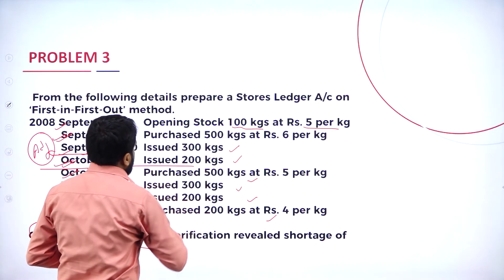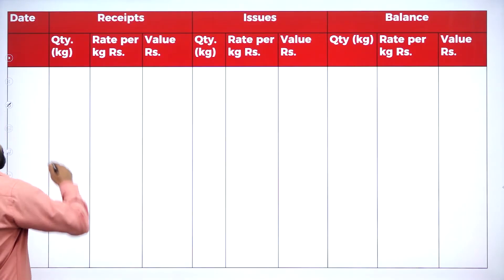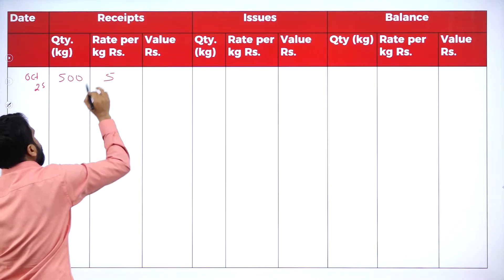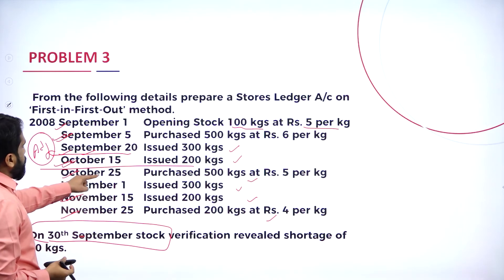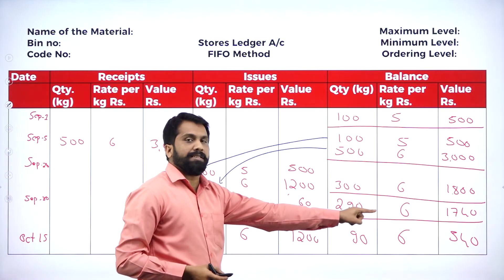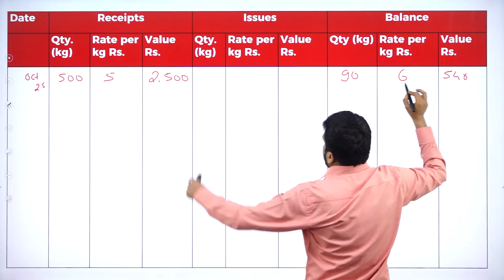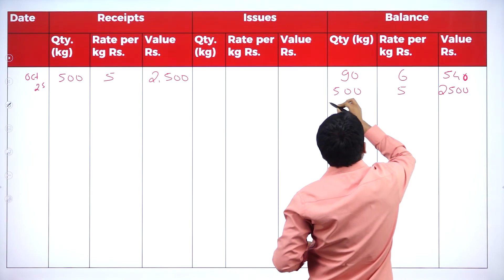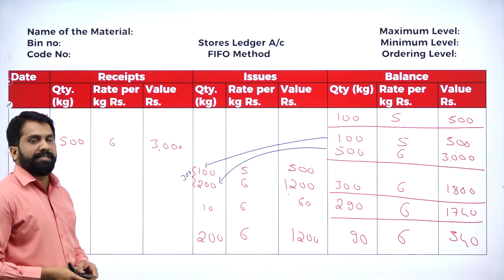October 25th: purchased 500 kgs at rupees 5 per kg — value 2500. In the balance column, copy the old balance: 90 kgs at 6, value 540. Then add the new purchase: 500 kgs at 5, value 2500. So now we have two boxes in the balance — the old box with 90 kgs at rupees 6, and the new box with 500 kgs at rupees 5.